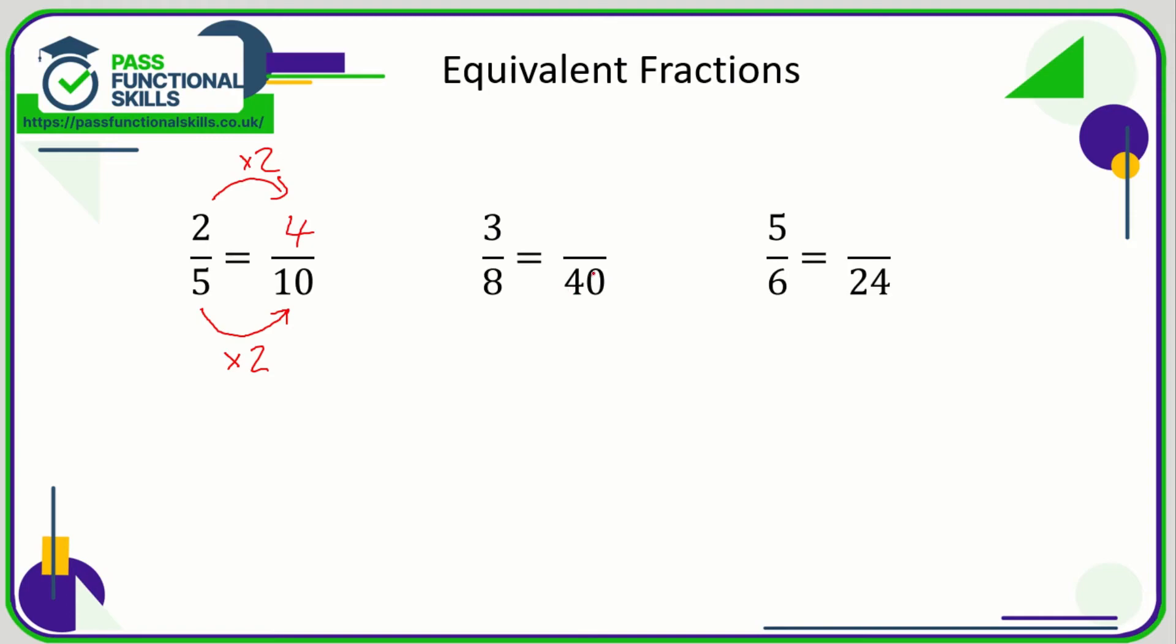Let's look at the next one. 3/8 is the same as how many 40ths? Well what do you do to turn an 8 into a 40? You multiply by 5. And if you can't work out what you need to multiply 8 by to turn it into a 40, then just do 40 divided by 8 and you'll get that number. 40 divided by 8 is 5. So what that means is 40 is 5 times greater than 8. So therefore 8 times 5 is 40, so therefore for an equivalent fraction we need to multiply the top by 5 as well, and 3 times 5 is 15.